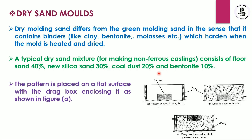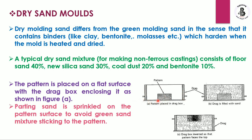For making dry sand molds, the pattern is placed onto a flat surface and enclosed by a drag. The pattern rests on the flat surface and the drag box encloses it. Parting sand is then sprinkled onto the pattern to prevent the green sand from sticking to it.